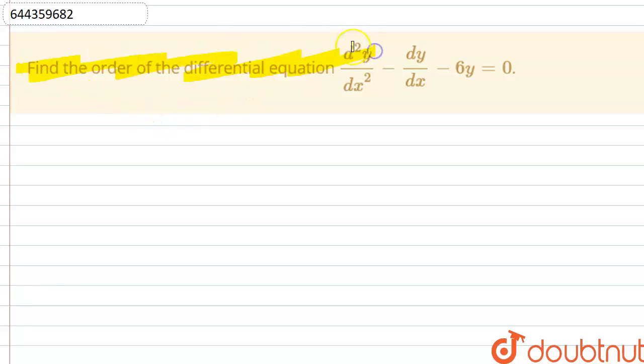Hello friends, the question is: find the order of the given differential equation. So the given differential equation is d²y/dx² minus dy/dx minus 6y equals 0.